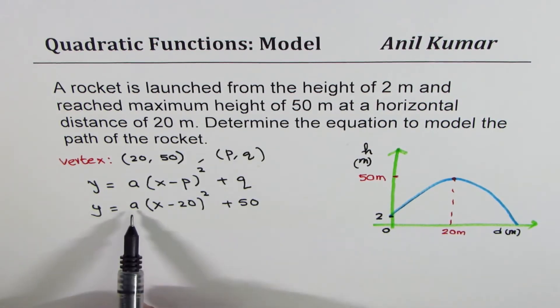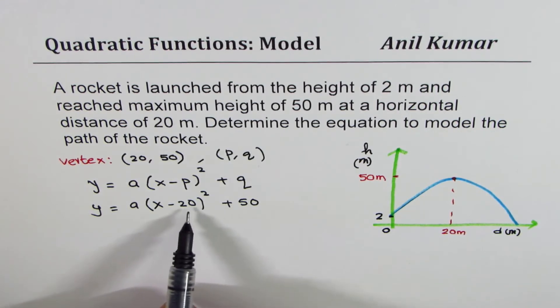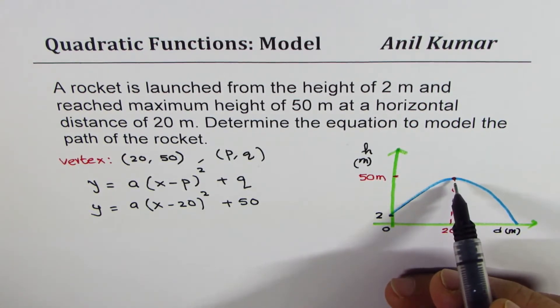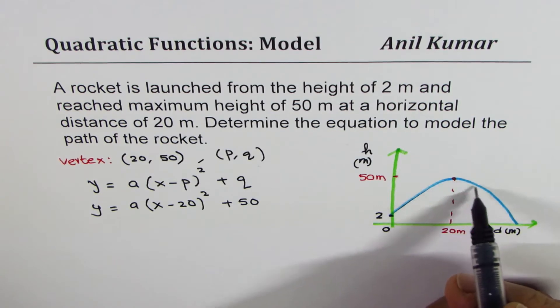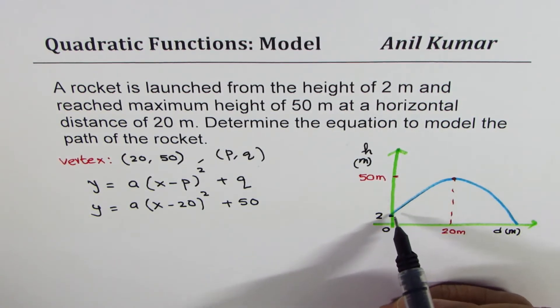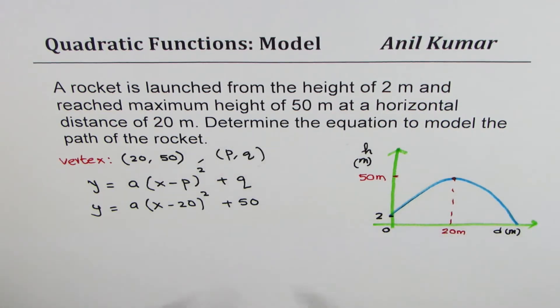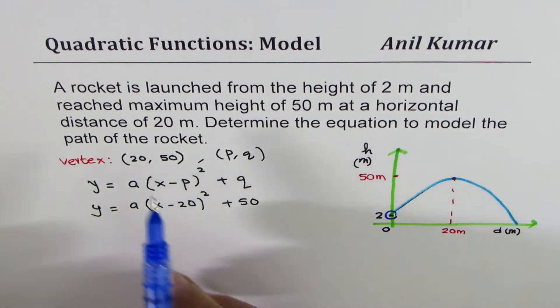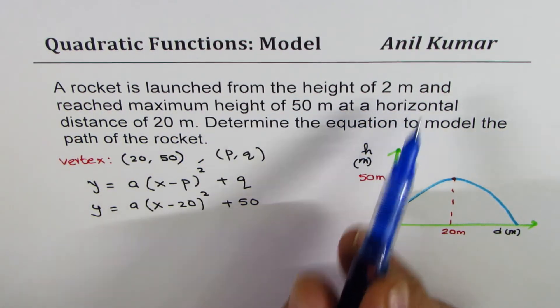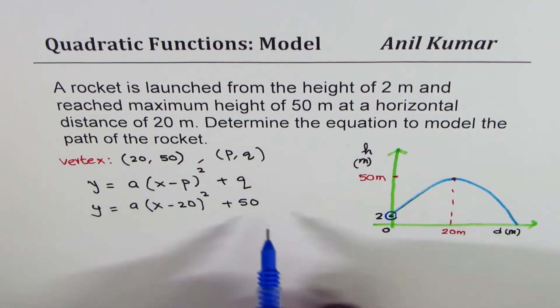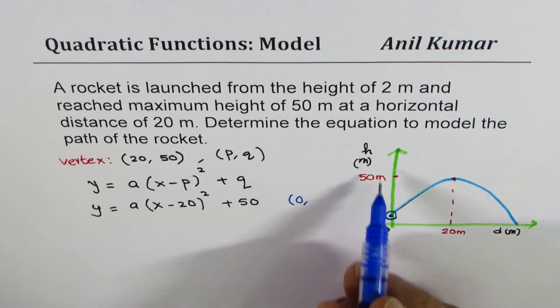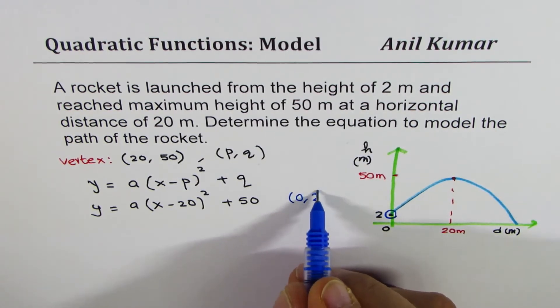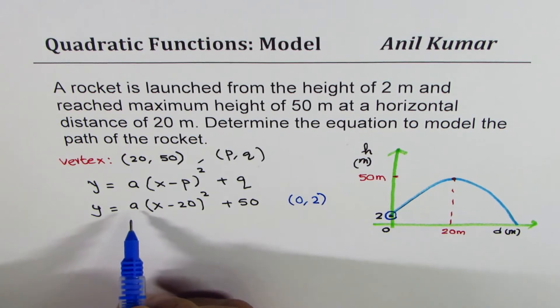Now we have to find a. This is a family of curves which will have vertex at (20, 50) but it could go through many different paths. We want to model exactly the path which has been described here. How do we do so? Well for that we are also given a specific point on the curve which is the initial point. It says a rocket is launched from the height of 2 meters. That means when x is 0 then y or h height is 2 meters.